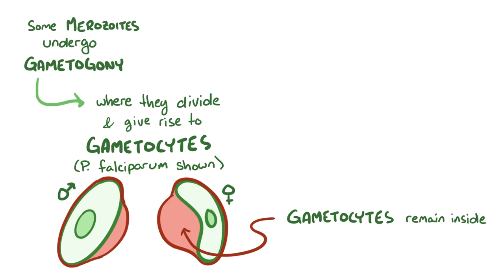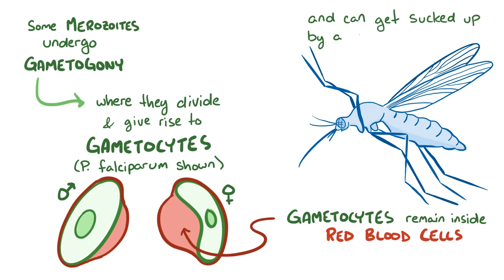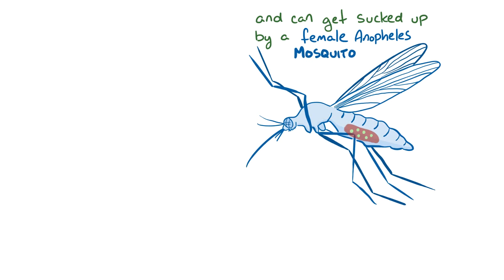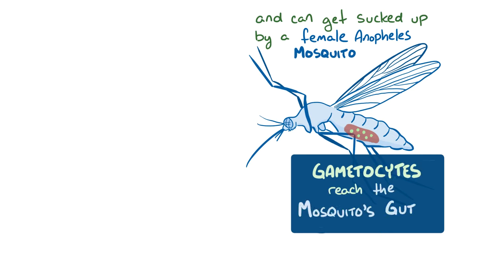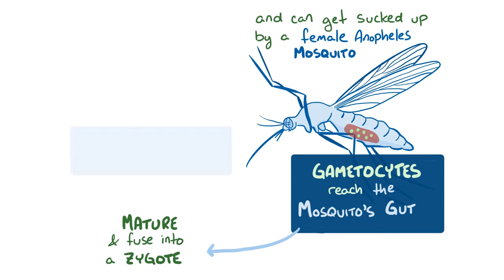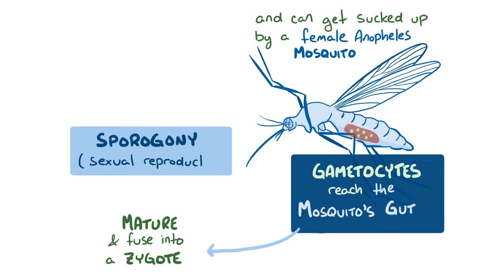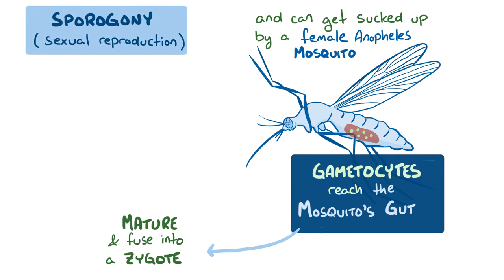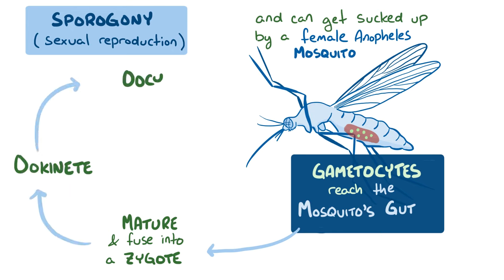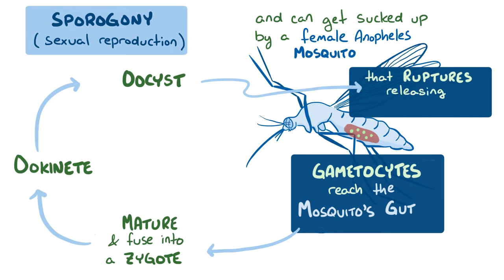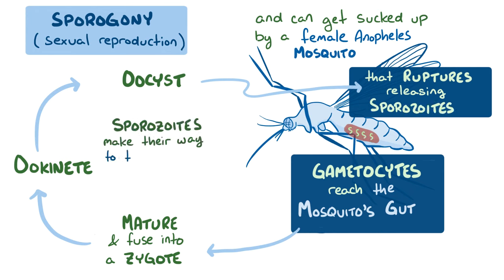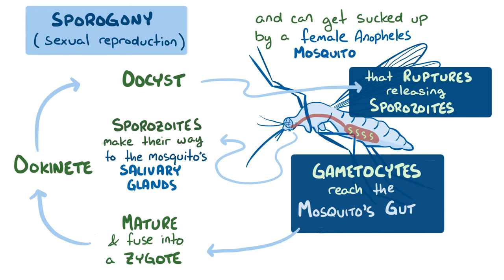These gametocytes remain inside of a red blood cell and can get sucked up by another female Anopheles mosquito that takes a blood meal from the infected person. The gametocytes reach the mosquito's gut, where they mature and then fuse together to form a zygote. This part of the plasmodium life cycle is called sporogony, and it's sexual reproduction, as opposed to schizogony, which happened in the liver and red blood cells. The zygote develops further into an ookinete, and then an oocyst that ruptures in the mosquito's gut, releasing thousands of sporozoites which navigate into the mosquito's salivary gland to repeat the cycle all over again.